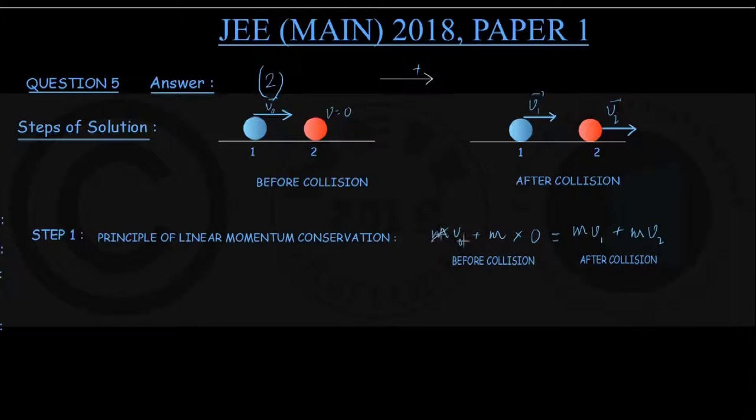From here we can see the m's cancelling out, and we get one equation: v0 equals v1 plus v2. That is my equation number 1.